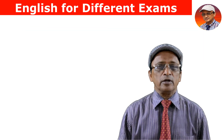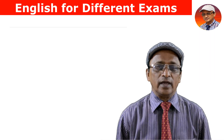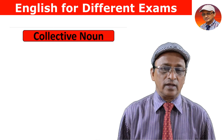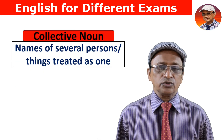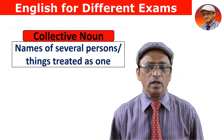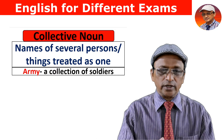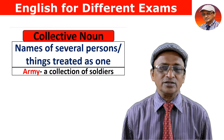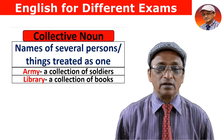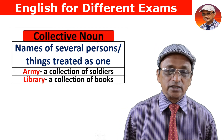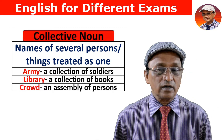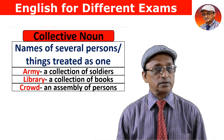The third category of noun is collective noun. Collective noun is the name of several persons or things treated as one. For example, many soldiers taken together form an army — so army is a collective noun. Many books taken together create a library. Many persons assembled together form a crowd — so crowd is a collective noun.